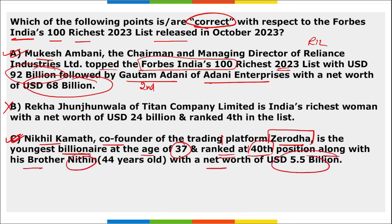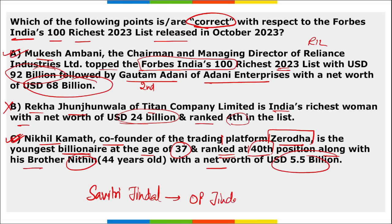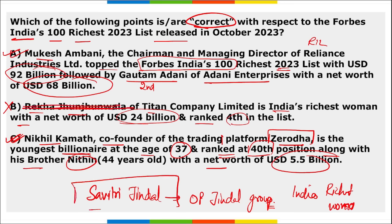Option C is also correct. But Option B says Rekha Jhunjhunwala of Titan Company Limited is India's richest woman with a net worth of $24 billion, ranked fourth. Option B is wrong — the correct name is Savitri Jindal of OP Jindal Group, who is India's richest woman. Not Rekha Jhunjhunwala — actually Savitri Jindal.